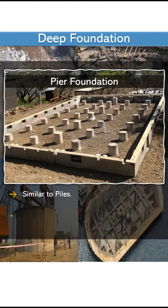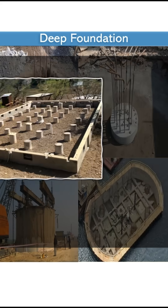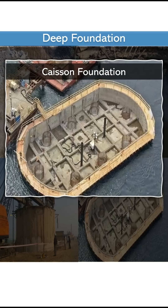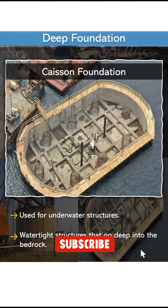The pier foundation is similar to piles, but piers are installed by digging holes and filling them with concrete. The caisson foundation is used for underwater structures. Caissons are watertight structures that go deep into the bedrock.